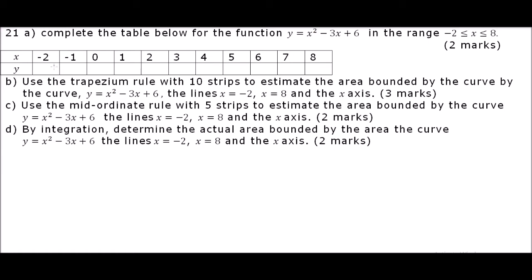What you need to do is take the values of X and substitute into our function. For example, when X is minus 2, Y will be minus 2 squared, that is 4, minus 3 times minus 2, that is positive 6. So this is 4 plus 6, and you add 6, so you get 10 plus 6 equals 16.